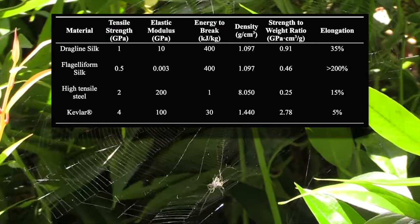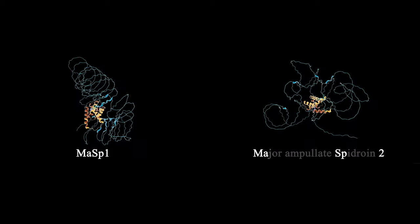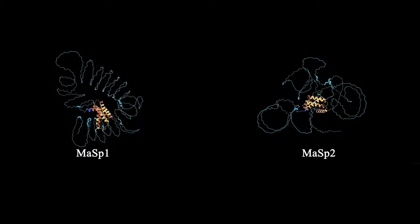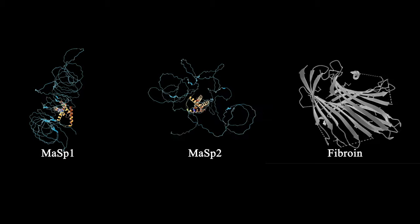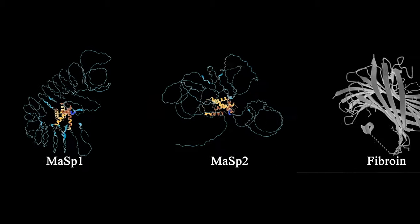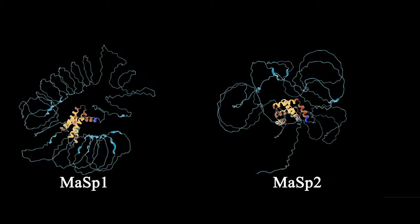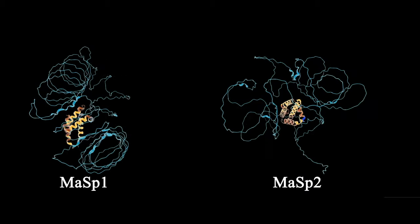Dragline is made up of two proteins, Major Ampullate Spidroin 1 and Major Ampullate Spidroin 2, abbreviated MaSp1 and MaSp2. These proteins are similar to the fibroin produced in insect silk. Both of these proteins have a unique chemical makeup and physical structure that lead to the desired silk properties.